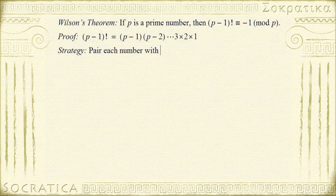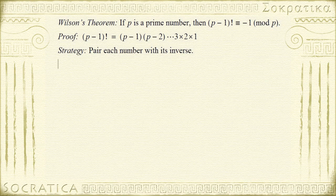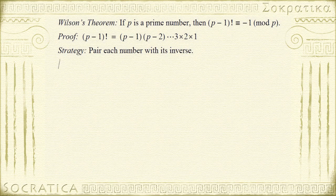The strategy is to pair each number with its inverse. Because we're working mod p, the integers mod p are a field, which means other than 0, you can't divide by 0. So every non-zero number mod p has an inverse. So we should conceivably be able to pair every number with its inverse.